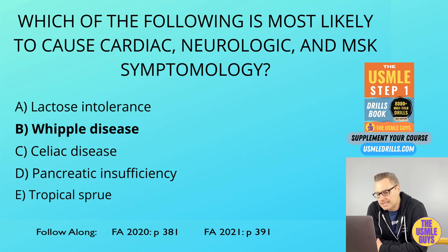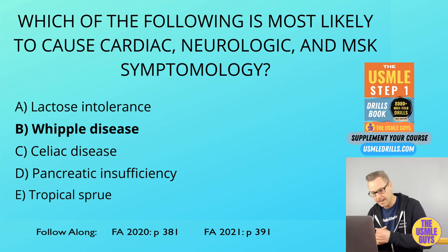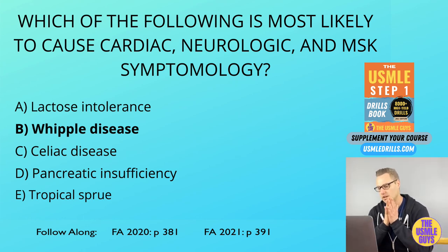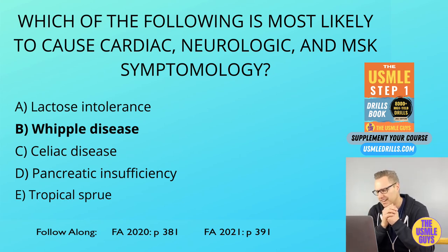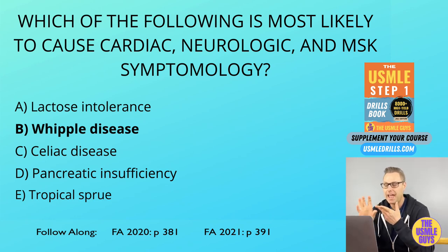Pancreatic insufficiency results from conditions like chronic pancreatitis or cystic fibrosis, whereby you'll see predominantly malabsorption of fat-soluble vitamins and vitamin B12. Two important findings that will tip you off are decreases in duodenal bicarbonate and fecal elastase.